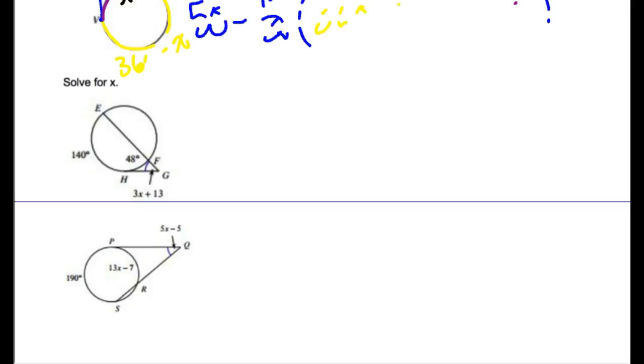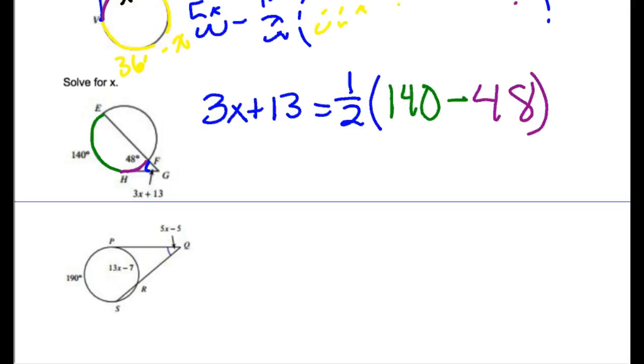Let's take a look at this one. We've got that exterior angle, which is 3x plus 13 right here in blue, has to equal one half of big arc. Let's color code it again. Big arc in green, 140. Minus little arc in purple, 48.